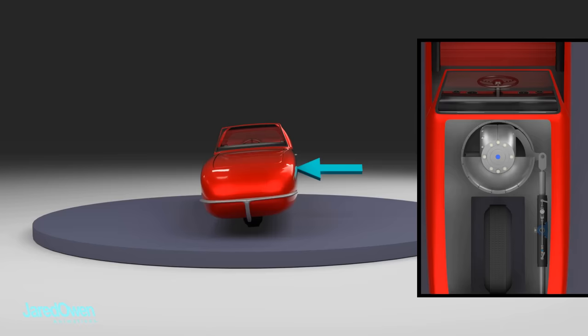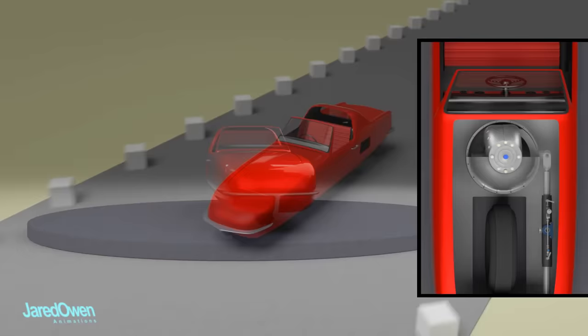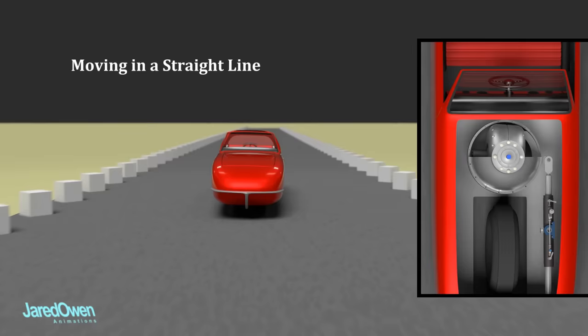The car also might get off-balanced. This might happen in the case of the driver sitting off to one side. Now let's see the car in motion. Going in a straight line, there might be a slight wobble, just as we've seen before.